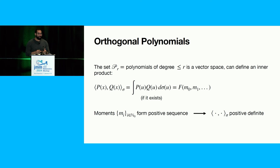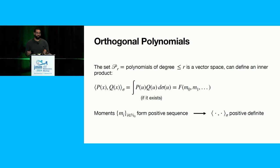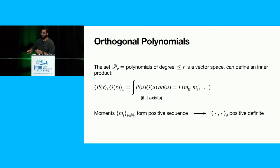Why is this actually an inner product? You can check all the properties. The key one is that these moments form a positive sequence — this tells us we get positive definiteness of this inner product, which is the key property to check. So we have a vector space, and we've defined an inner product. The name of the slide is 'orthogonal polynomials,' so you can probably guess where I'm going with this.